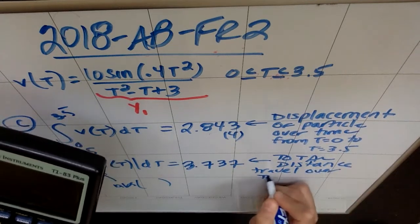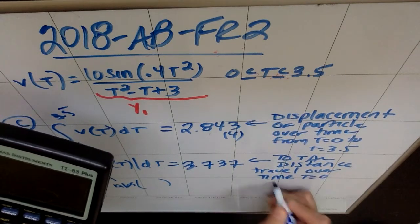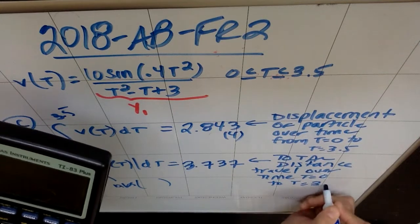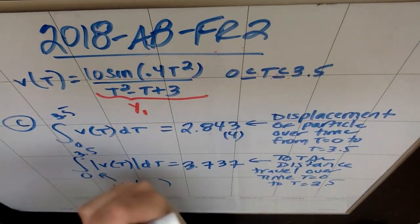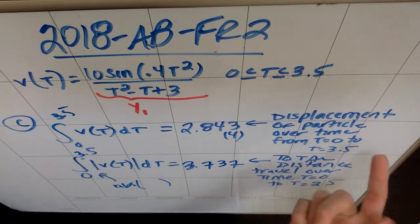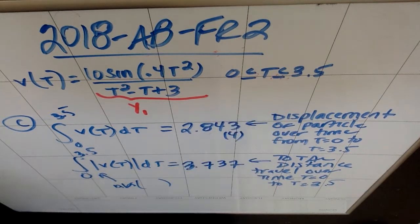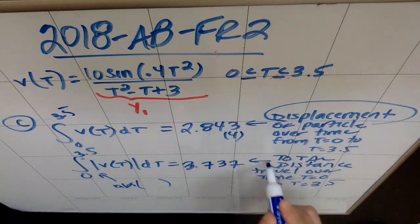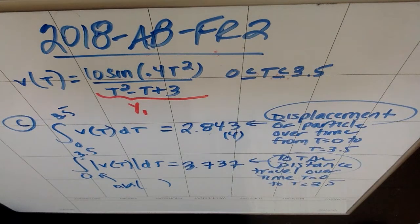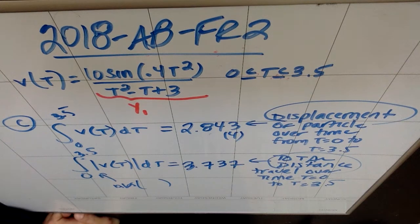And I get 3.737. This is the total distance traveled over the time from t equals 0 to t equals 3.5. A couple things you want to have in your work. You want to make sure that you reference the time interval. You could either do it the same way in here. But you want to make sure you mention the time interval, and you need to make sure that you know the difference between displacement and total distance. Total distance is what happens when you integrate speed. That's the difference here.